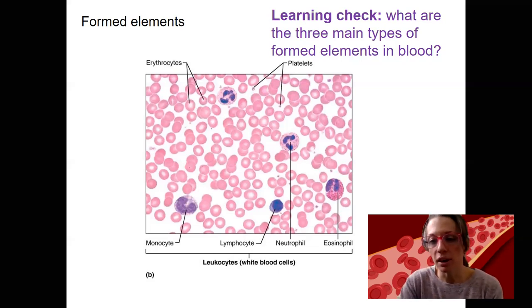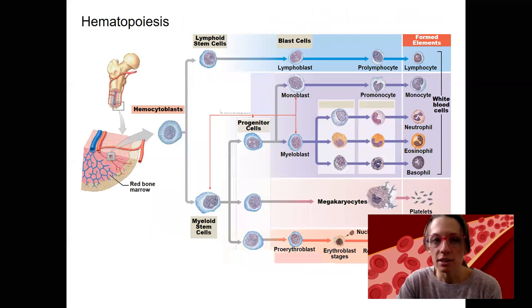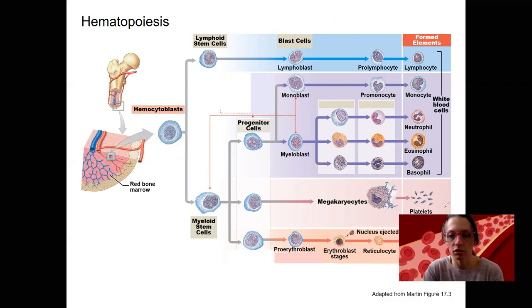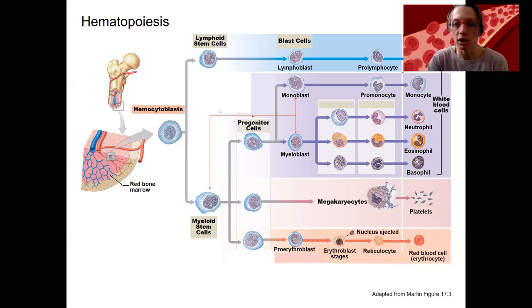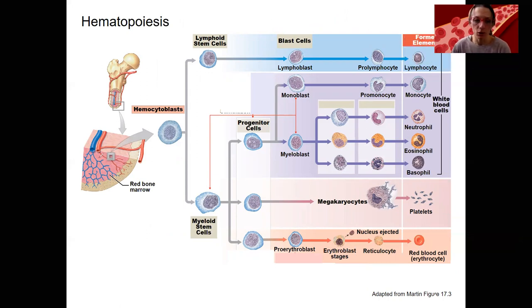So pretty much after birth and in children and throughout adulthood, this hematopoiesis, which refers to the formation of blood cells, is going to occur in the red bone marrow, which you also may remember is distributed differently in children, fetuses versus children and adults. So it does get less prevalent as humans grow older. But there's some present in all humans. And in the red bone marrow, this is where blood cells are produced.